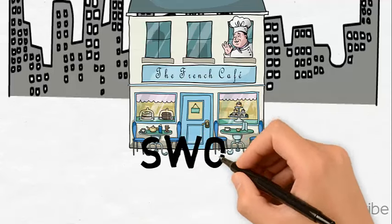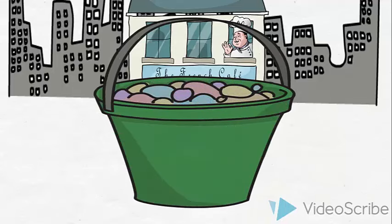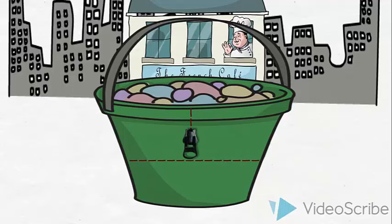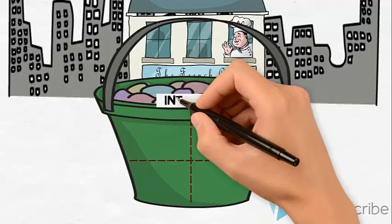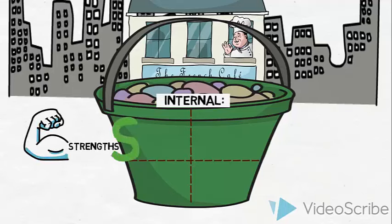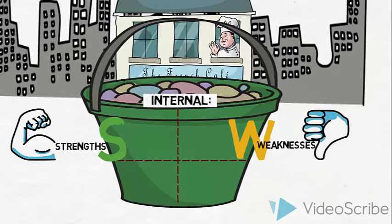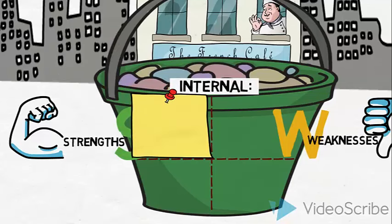This is where the SWOT comes in handy. The SWOT is like a large bucket where all the conducted research and analysis is collected. However, the information is not just thrown in at random. Instead, it is neatly organized and presented in order to provide the overview that we were looking for. Firstly, we will collect and present all the internal information that we find relevant. We will divide them into what we believe to be strengths of the French Café and what we believe to be their weaknesses. Let us highlight just a few of these findings.